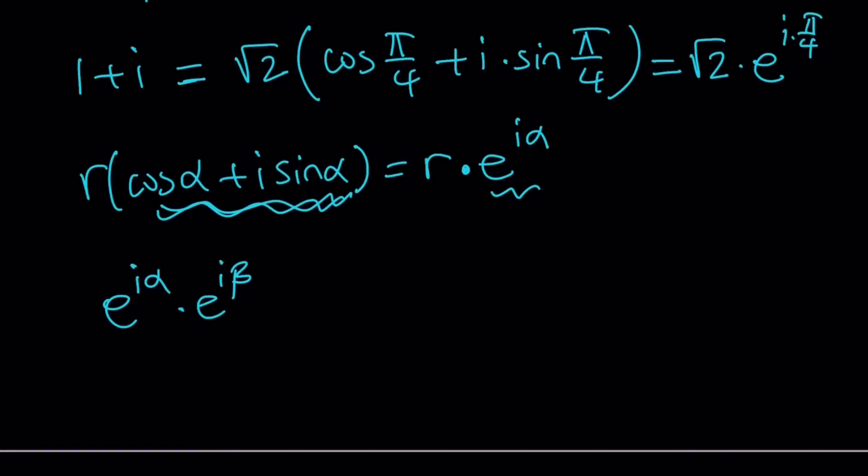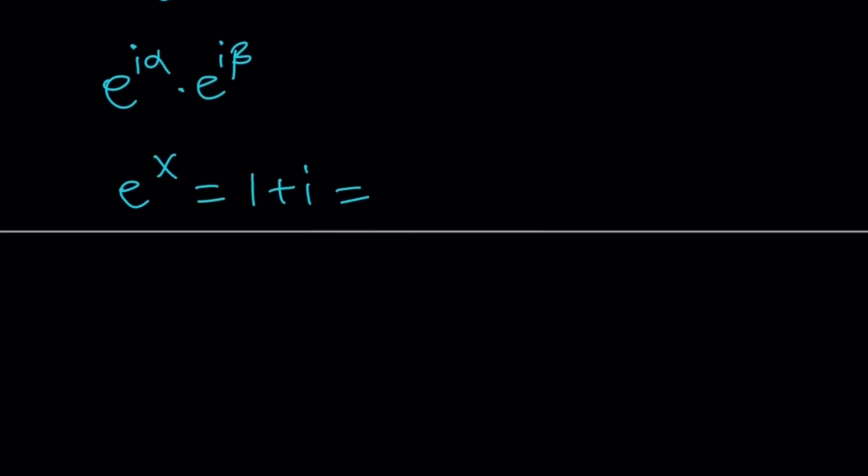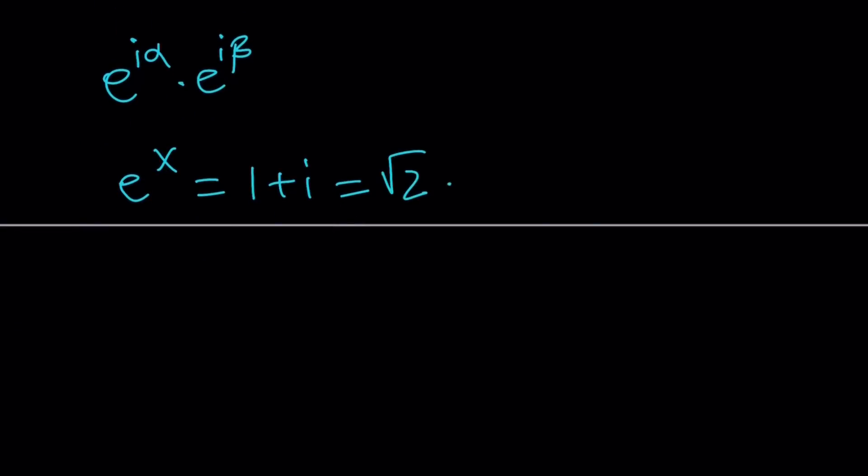For now, let me write it as pi over 4. Later we're going to talk about the general solution. So here's what we have so far. I had e to the x equals 1 plus i. But I was able to write 1 plus i as square root of 2 times e to the power i times pi over 4 in exponential form.